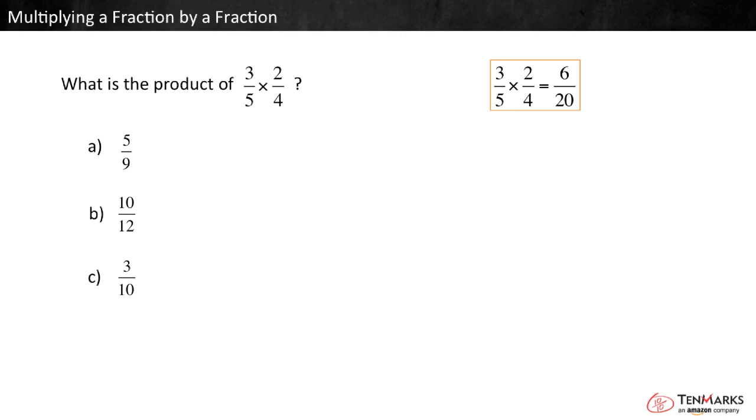To find equivalent fractions, multiply or divide both the numerator and denominator by the same number. 6/20 is equivalent to 3/10, because 6 divided by 2 equals 3, and 20 divided by 2 equals 10. So the correct answer is C, 3/10.